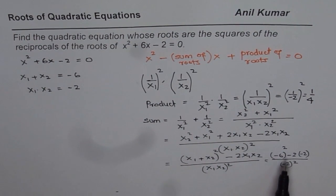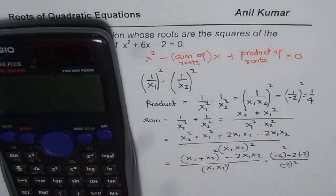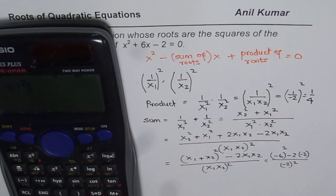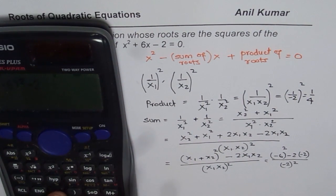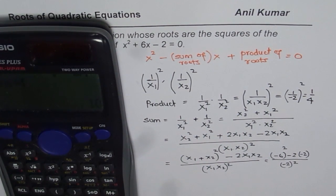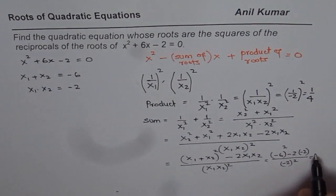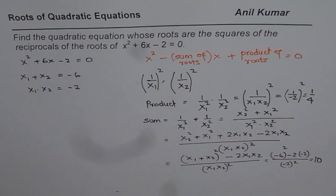Substituting the known values: x1 plus x2 is minus 6, and x1·x2 is minus 2. So we get (minus 6) squared minus 2 times (minus 2), divided by (minus 2) squared, which equals 36 plus 4 over 4, giving us 40 over 4. Dividing 40 by 4 gives 10. So the sum of the new roots is 10.